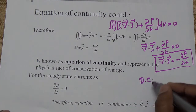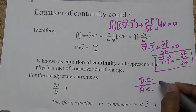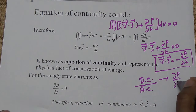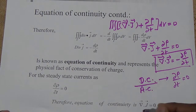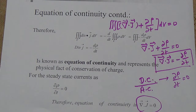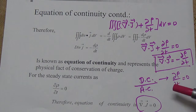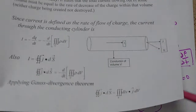Now, if we include the type of current — whether steady state direct current or alternating current — into this derivation: if we use direct current, that is steady state current, then ∂ρ/∂t = 0. If this equals zero, then ∇·J = 0. If the divergence of J equals zero, it means the field is solenoidal — similar to the earlier case where ∇·E = 0. This means the total current is constant.